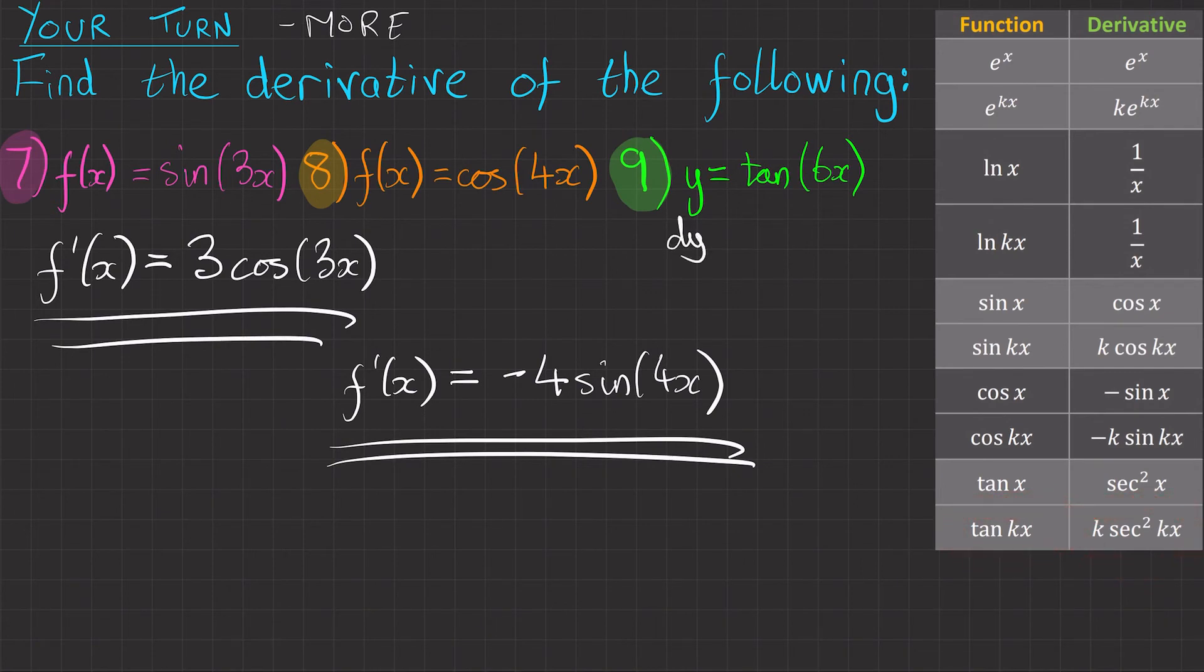So dy/dx equals k, which is 6, sec squared, and kx, so 6x. And there's our answer for question nine.